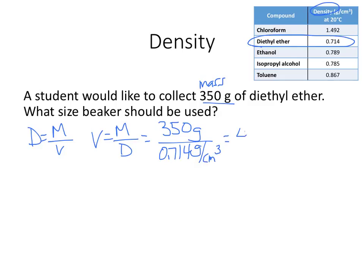So I have 350 grams divided by diethyl ether is 0.714 grams per centimeter cubed. And that gives me 490.19 centimeters cubed. So approximately 490. The question is not what is the volume of the liquid, but it's what size beaker should be used. So I would think any beaker that has a capacity of 500 milliliters would probably fit my liquid. Anything that's at least 500, so 500 or 750 or a thousand, anything bigger than 500 milliliters will fit that liquid.